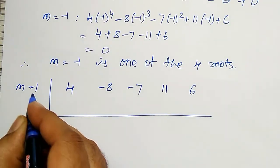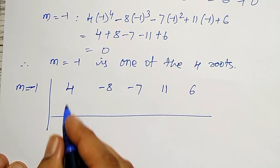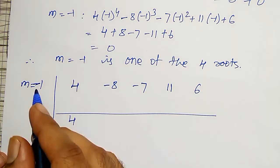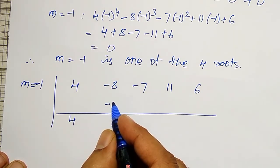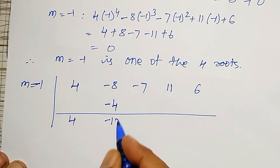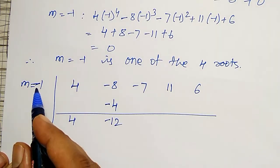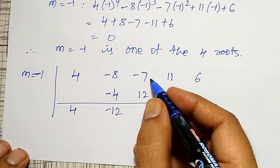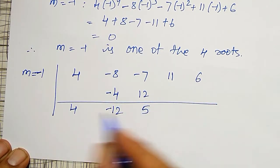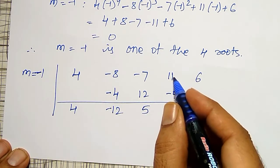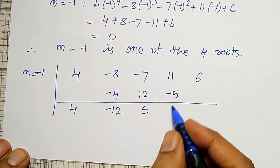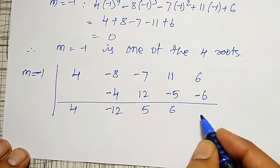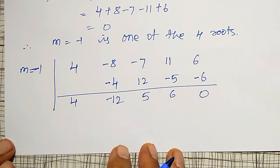Therefore, first term it is 4, I will continue as it is. 4 × (-1) = -4. Therefore, it will become -12. -12 × (-1) will become +12. +12 + (-7) will become 5. 5 × (-1) = -5. 11 + (-5) will become 6. 6 × (-1) will become -6. Therefore, it is 0. And the remaining terms,